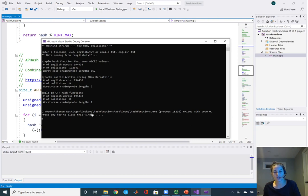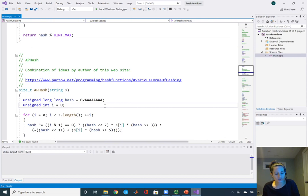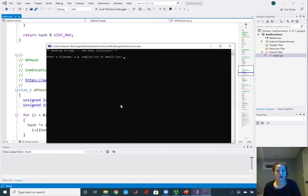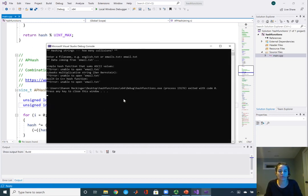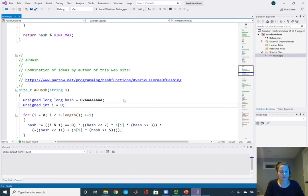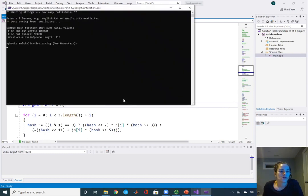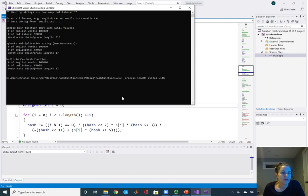Let's try it again with the emails, something with a little bit more pattern. The simple hash function does a little better with the emails, so it's at 300 as the worst case. But you'll see the multiplicative and the built-in C++ hash function both have worst case of 17.